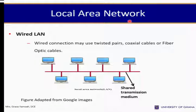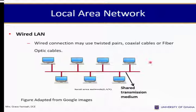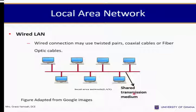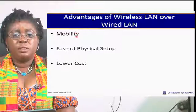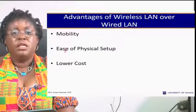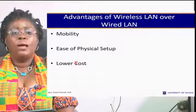Local area networks have different topologies. Wired LAN can be in a bus, ring, or star setup. Wired connections may use twisted pairs, coaxial cables, or fiber optic cables. Advantages of wireless LAN over wired LAN include mobility — you can use it anywhere you sit — ease of physical setup, and lower cost.